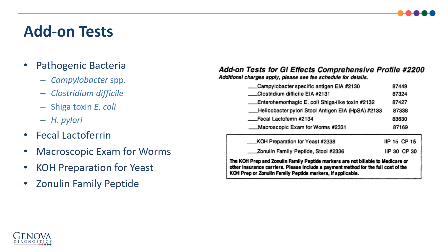Fecal lactoferrin is an inflammatory marker similar to calprotectin; calprotectin detects lower levels of inflammation. The macroscopic exam for worms should be added on when a suspected worm is visible in the stool. Clinicians can add KOH prep for yeast if yeast is suspected — sometimes an organism is not viable enough for culture, but budding yeast may be present under the microscope. Zonulin family peptide is offered as an experimental marker that may have zonulin-like properties; zonulin is associated with the cellular tight junctions of the GI tract.